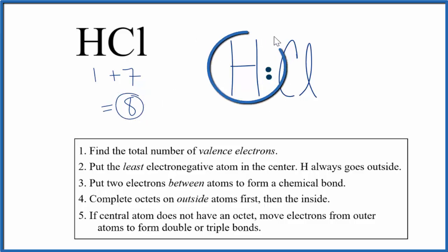Hydrogen only needs two valence electrons, so it's okay. Let's complete the octet on the chlorine. So we've used two, four, six, eight. We used all eight valence electrons.